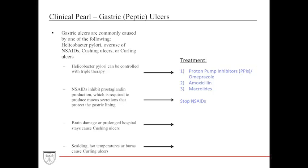Cushing ulcers occur in individuals with brain damage, head trauma, or prolonged hospital stays. Physicians often prescribe proton pump inhibitors prophylactically to prevent in-hospital gastric ulcers. Curling ulcers occur from scalding temperatures or burns — the practical prevention is simply to cool your food before swallowing.